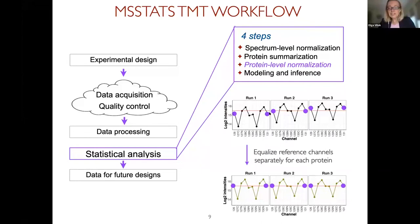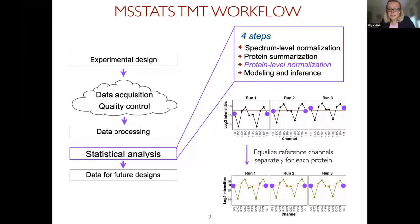We then consider one protein at a time and apply summarization. We use two-way median polish as a robust summarization method, which has a censoring piece that accounts for missing values. Now we can compare abundances of a protein between samples within each run, but we still cannot compare different runs because different features correspond to different peptides. The third aspect is protein-level normalization, where we typically have reference channels — channels without known biological variation — available in every mixture. We equalize these reference channels and apply the same shifts to the endogenous features of the same run.